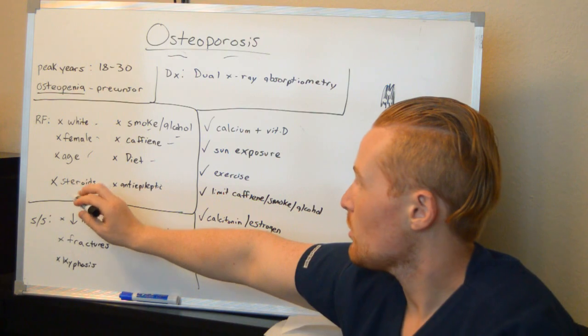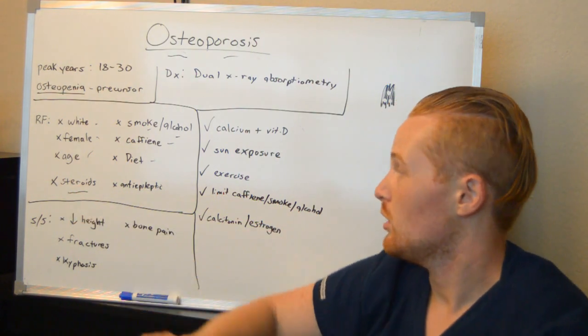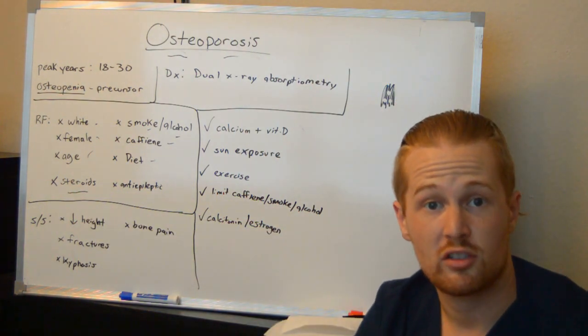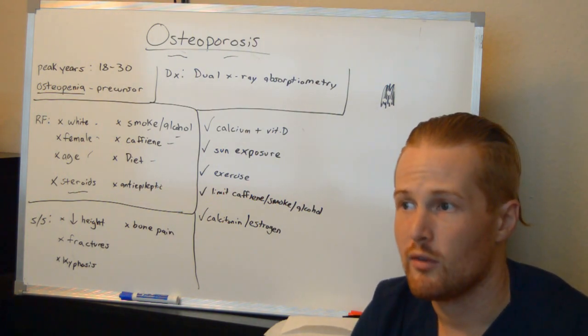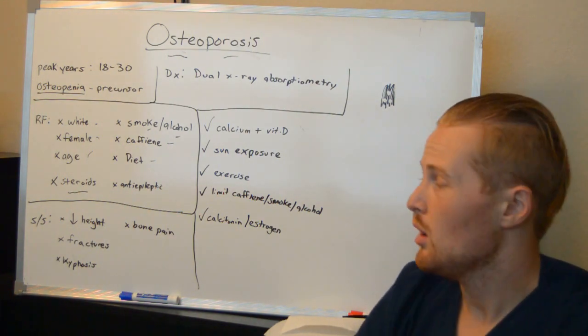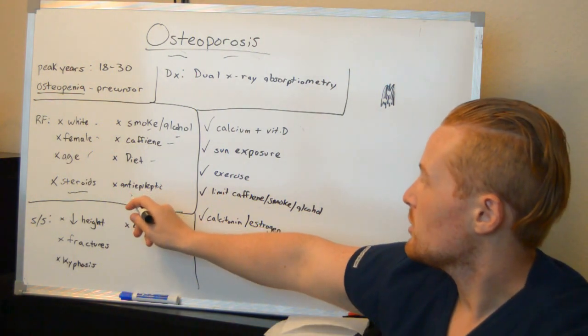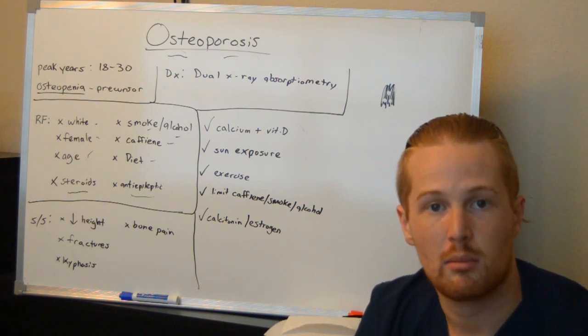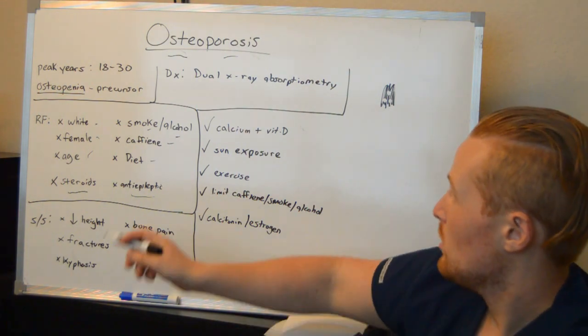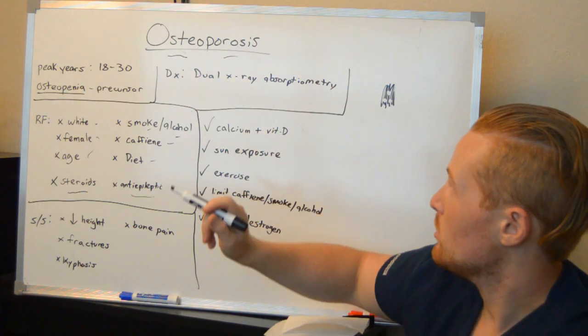And two medicines I want to point out here. Steroids - long term steroids such as prednisone for say a COPD patient or a patient with some sort of autoimmune disorder. And then antiepileptics such as phenytoin. So someone that has a seizure disorder and epilepsy and they're taking chronic long term seizure medicines. Both of these medicines could lead to osteoporosis.